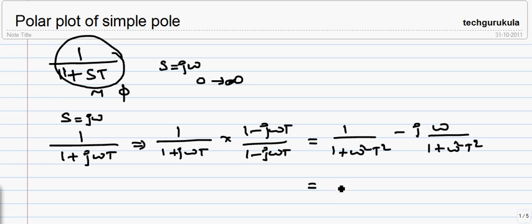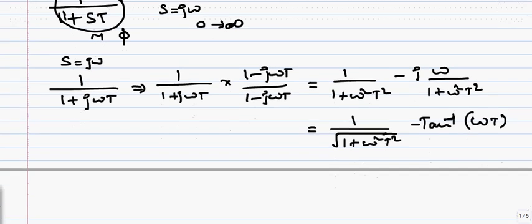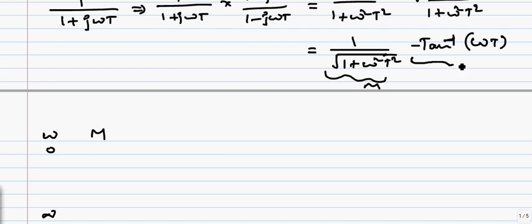This can also be written in terms of magnitude and phase, which is the polar form of representation. The magnitude is 1 over √(1 + ω²T²) and the phase angle is −tan⁻¹(ωT). If we take ω values changing from 0 to infinity, the magnitude M and phase angle φ = −tan⁻¹(ωT) can be evaluated.